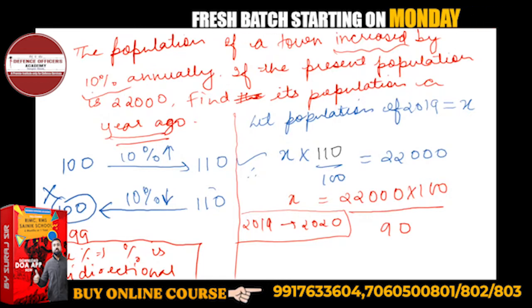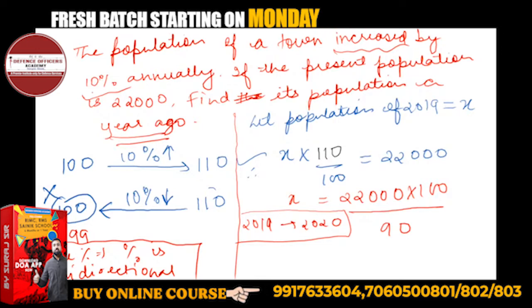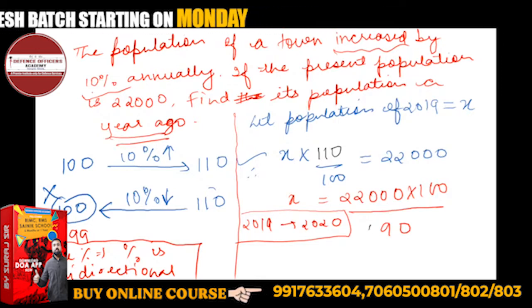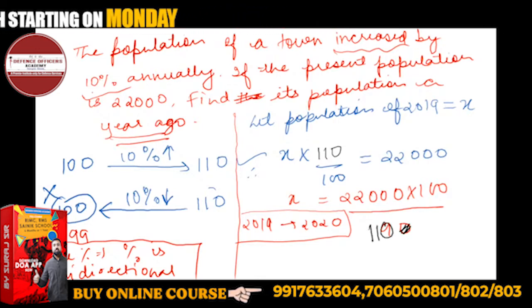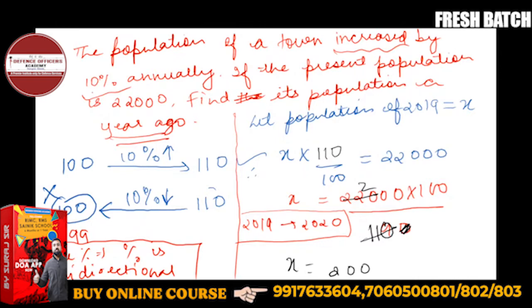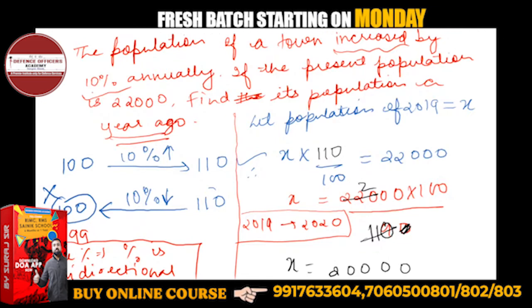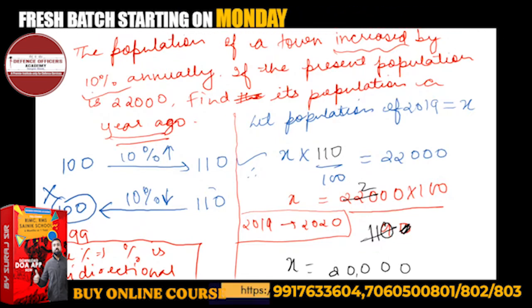Now let's solve this. So 110, two times, and the population will be how much? Four zeros will going to come. 20,000.